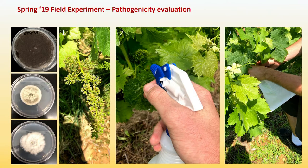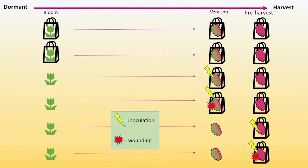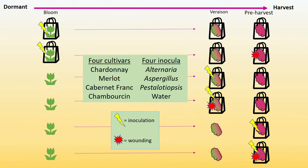We prepared spore suspensions as inoculant under lab conditions, and then in the field we inoculated the grapes with spore suspensions from different fungi respectively. We did this at three different development stages: bloom, veraison, and pre-harvest. For each stage, we had two treatments — wounding and non-wounding. We first inoculated the berries with a spore suspension, then waited until pre-harvest to injure the fruit to see if wounding would facilitate infection. This was done with four different cultivars and those three fungi.